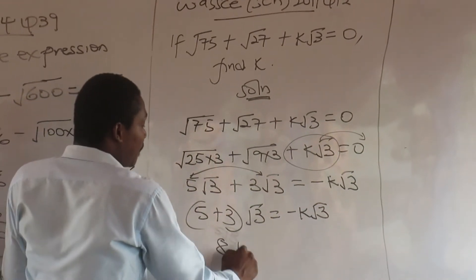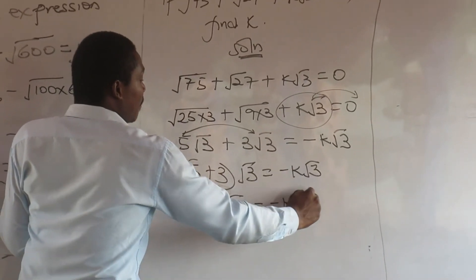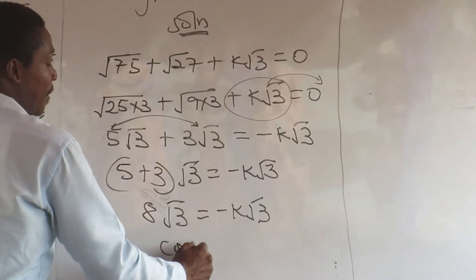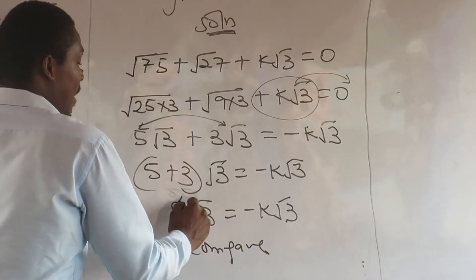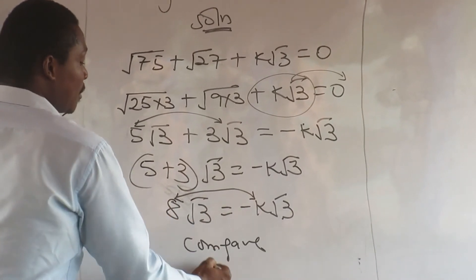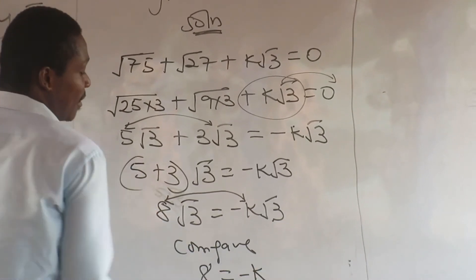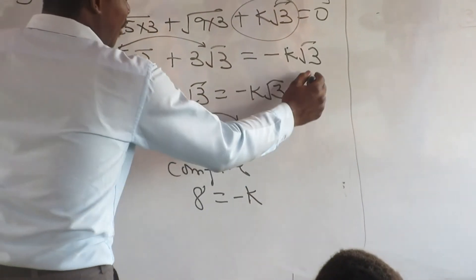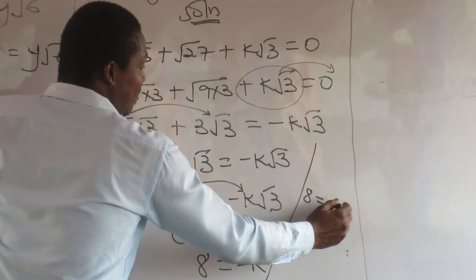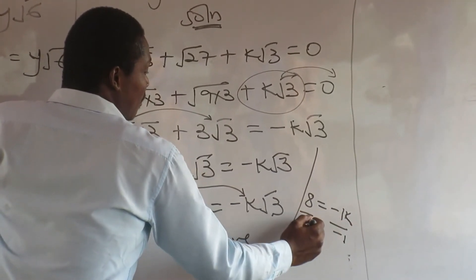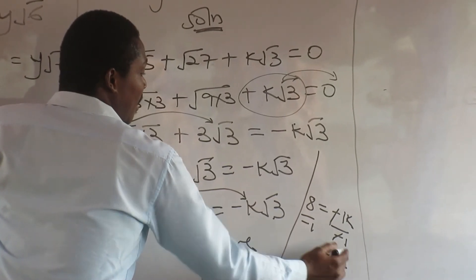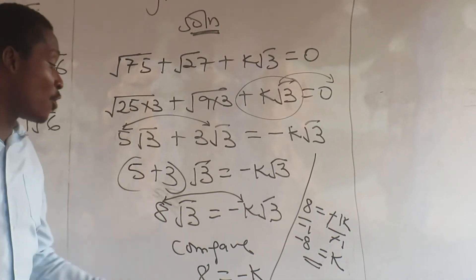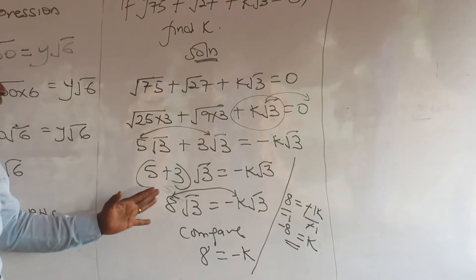Now that is 8 root 3. You have negative k root 3. What do I do? Compare left hand side to right hand side. So you see outside to outside, a root to a root. 8 equals negative k. But you are looking for k, not negative k. It means you have to divide through. So I have 8 equals negative 1 k over negative 1. So that at least you can satisfy your curiosity. Why did I put negative 1 k there? I want you to see that the coefficient for this case is 1. So that is the value.